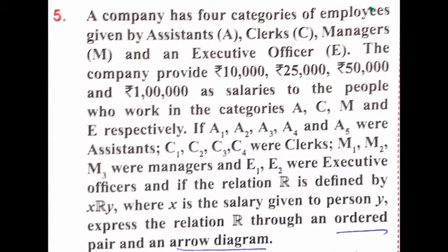So listing the employees: Assistant — A1, A2, A3, A4, A5. Clerk — C1, C2, C3, C4. Manager — M1, M2, M3. Executive Officer — E1, E2. The task is to express the relation as a set of ordered pairs and as an arrow diagram, with salary as X and employees as Y.